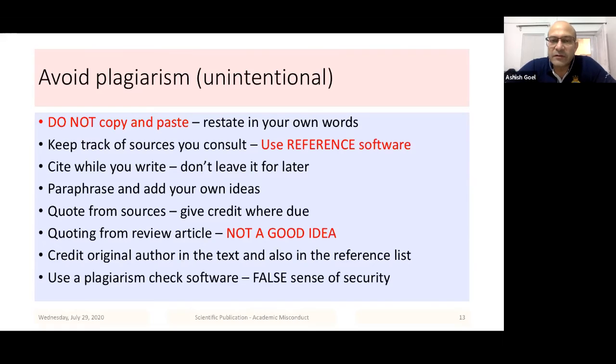If you are quoting from a review article, if you have read a systematic review and want to quote one of the studies included in that review article, please remember this is not a good idea. You should be crediting the original author or the original study and you should not be citing secondary references. The primary reference is that particular author and that original study, not this review article. Always credit the original author in the text of your article and also in the reference list.